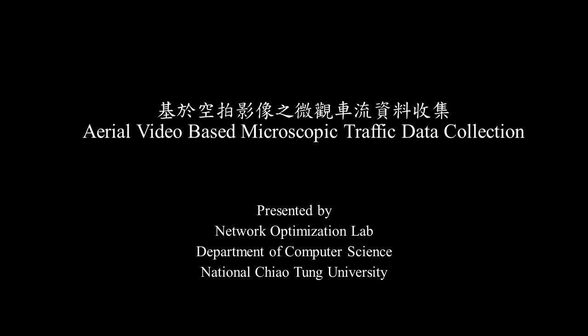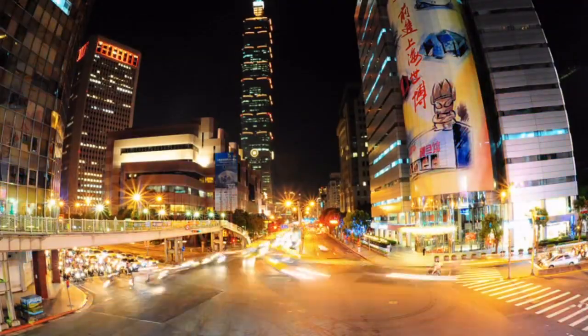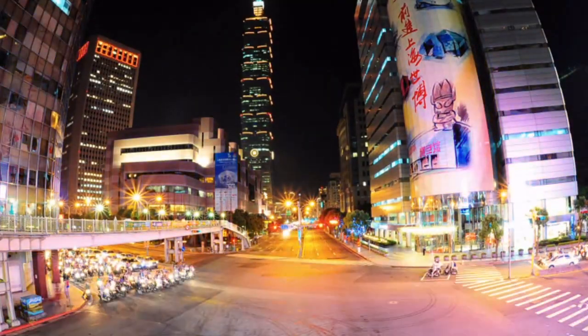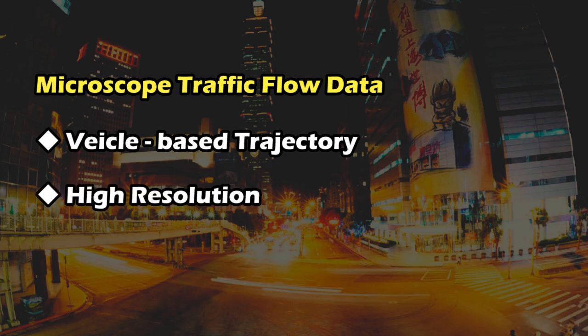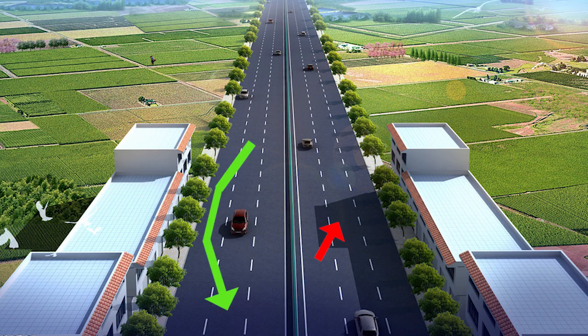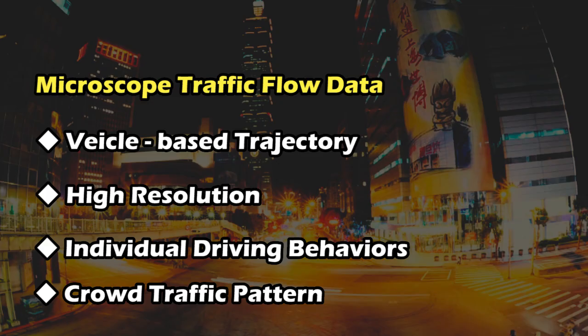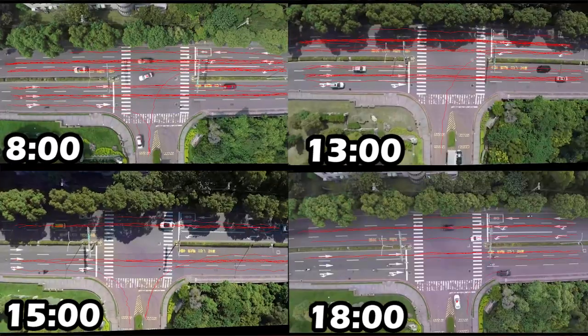This video is made by Network Optimization Laboratory. Microscopic traffic data is vehicle-based information with high resolution in time and space. It is able to extract individual behaviors such as lane changing and overtaking, or crowd traffic patterns such as driving modes in each period.